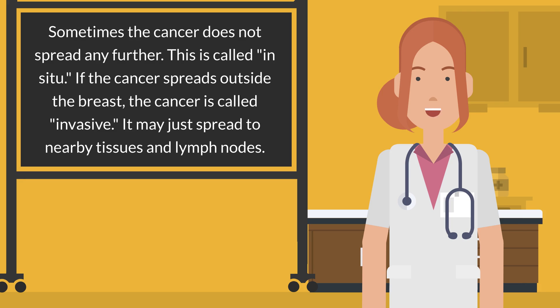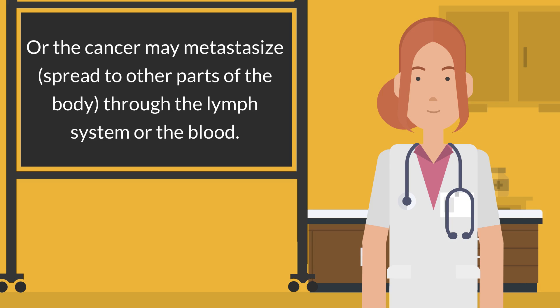It may just spread to nearby tissues and lymph nodes. Or the cancer may metastasize — spread to other parts of the body through the lymph system or the blood.